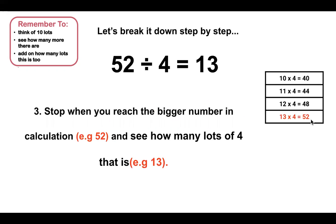I'm going to stop when I reach 52 because that is the bigger number in my calculation, and that will show me how many lots of 4 that is. In the table, it shows me that there are 13 lots of 4 that equal 52. That would make my answer for 52 divided by 4, 13.